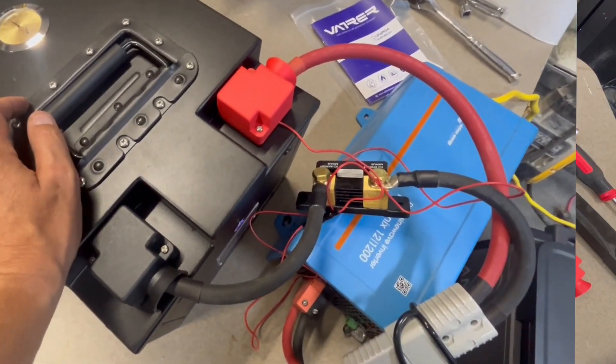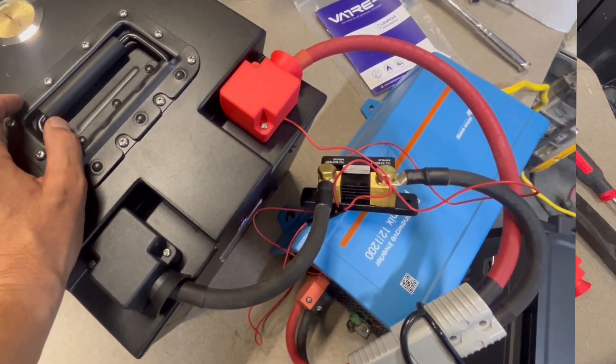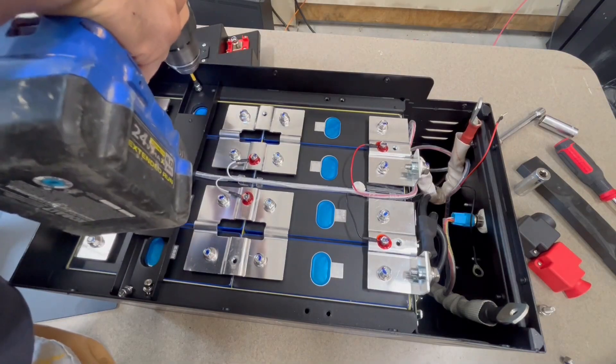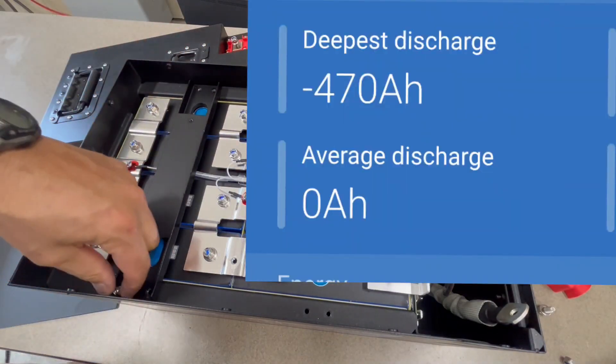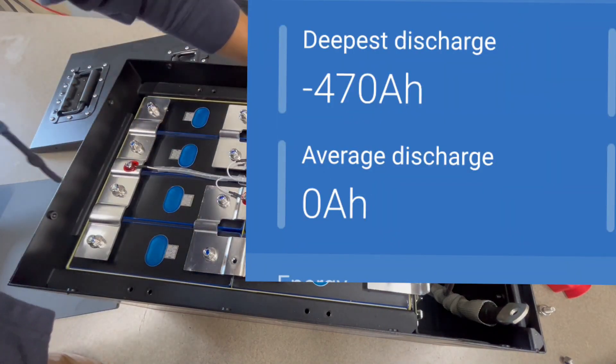I did a capacity test and I can show a photo here of me hooking everything up. I won't bore you with the details, but it's the exact same way I did the test on other batteries. I used the Victron Phoenix inverter and the results were great. It passed with flying colors. 470 amp hours of discharge on this battery.